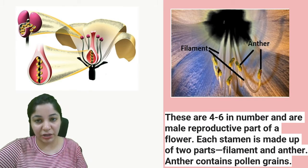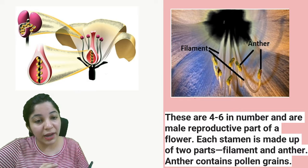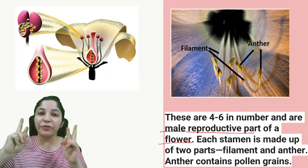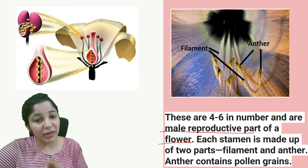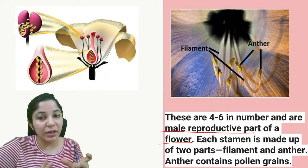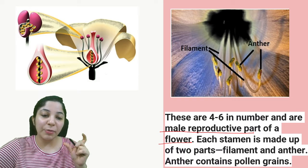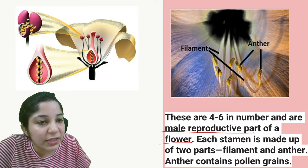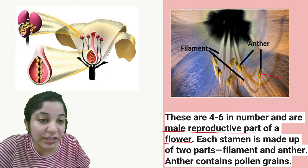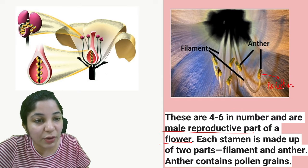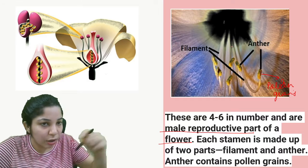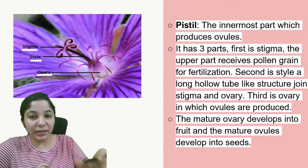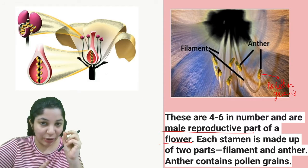There are four to six stamens in number and they are the male reproductive part of the flower. Each stamen is made up of two parts — filament and anther. You can see this in the actual live image of a flower, where you can clearly see the anther carrying pollen grains, and the long tube-like structures are the filaments which support the anther. If you cut it into parts, you can see the pollen grains inside.